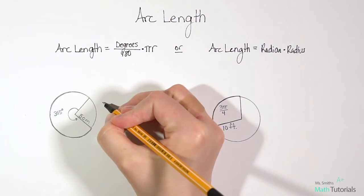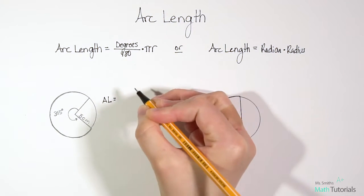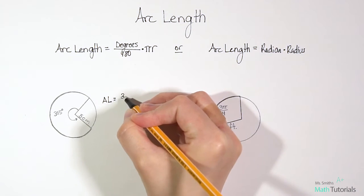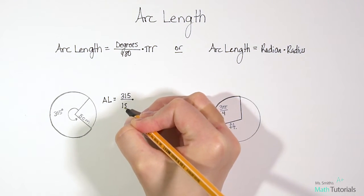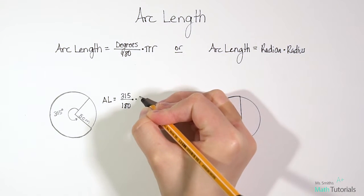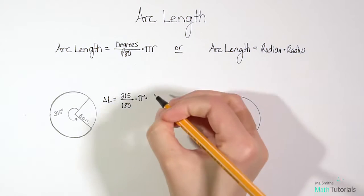So we can set this up as arc length, and I'm just going to use AL equals degrees. So 315 degrees over 180 times pi times r. And r means radius, so the distance from the center of the circle to the edge of the circle. In this case they've told us that is 5 centimeters.